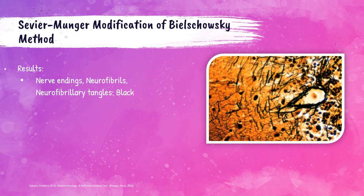When stained with the Sevier-Munger modification, nerve endings, neurofibrils, and neurofibrillary tangles will be black. A photo of a cerebellum tissue section shows the black dendritic processes of basket cells.